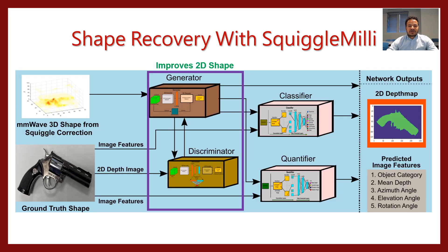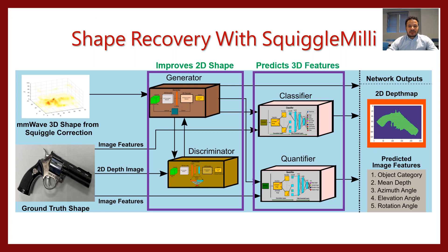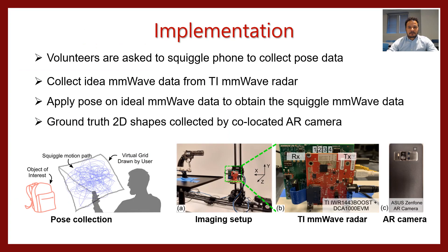We use a generator and discriminator to improve the 2D shape, and use a classifier and quantifier defined on top of that to predict the 3D features. To implement this system, we first ask a volunteer to scan the phone to collect pose data. We then collect ideal Millimeter Wave data from the TI Millimeter Wave radar. We apply the pose on this ideal Millimeter Wave data to obtain the SQL Millimeter Wave data. At the same time, we collect the ground truth 2D shapes using a co-located AR camera.